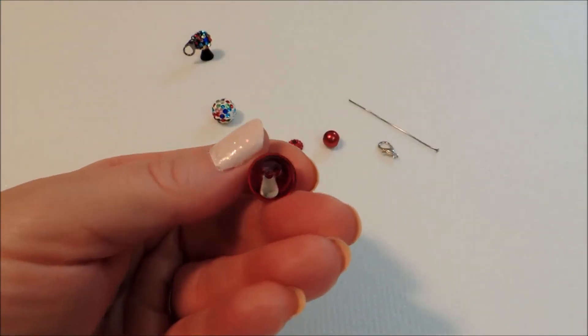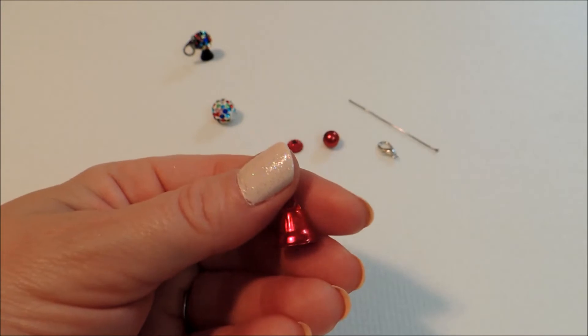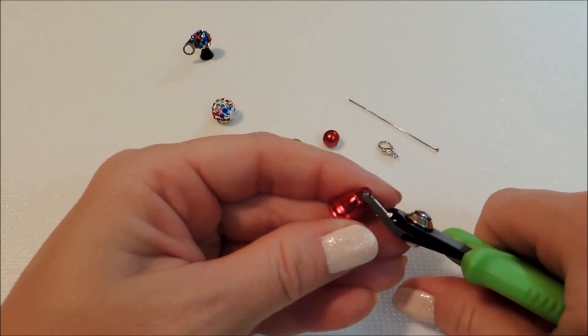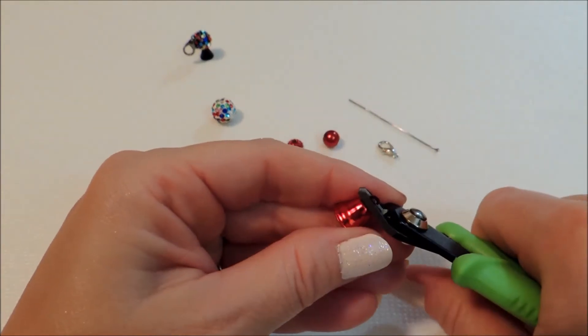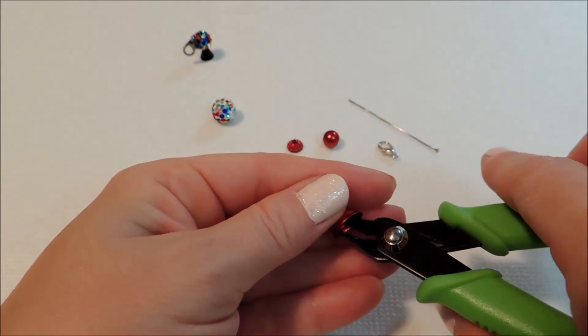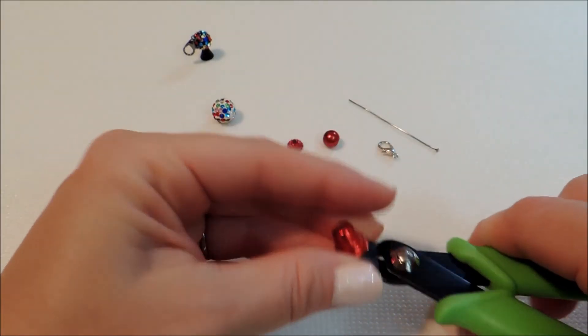To get started, the first thing we're going to do is take the little jingly part out of the bell. To do that I just clipped it away with my wire cutters, and then you can pull the rest out from the bottom.